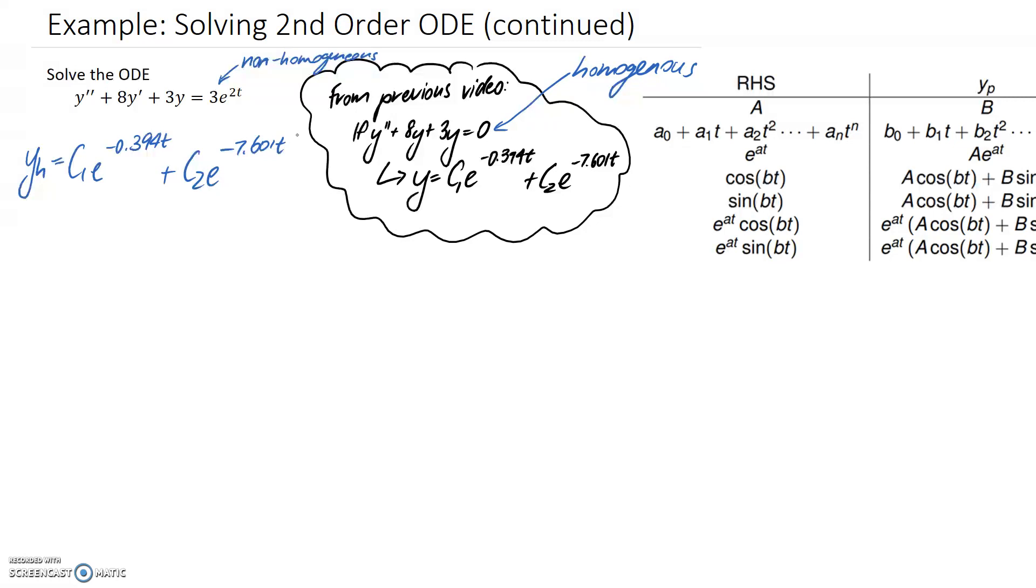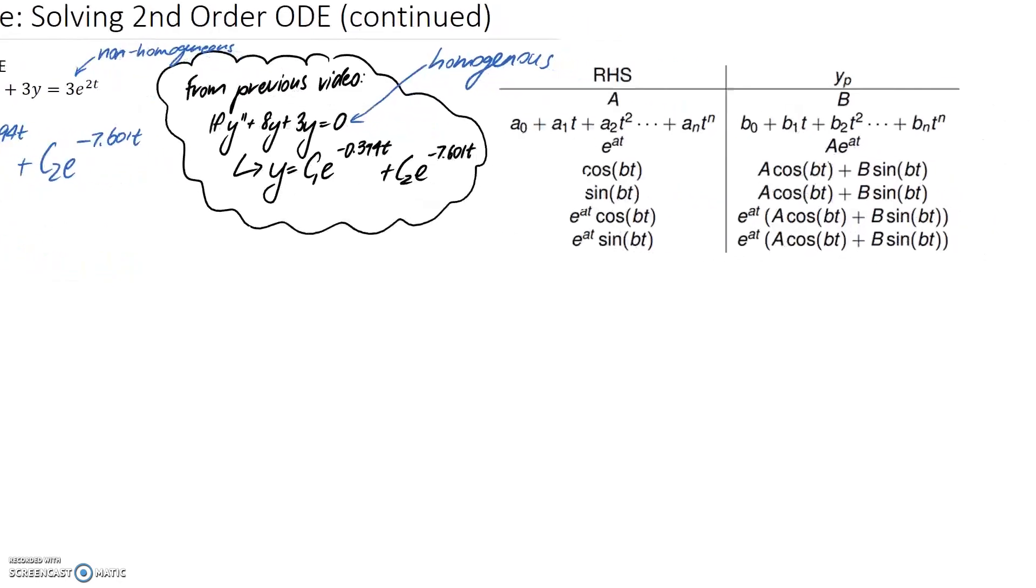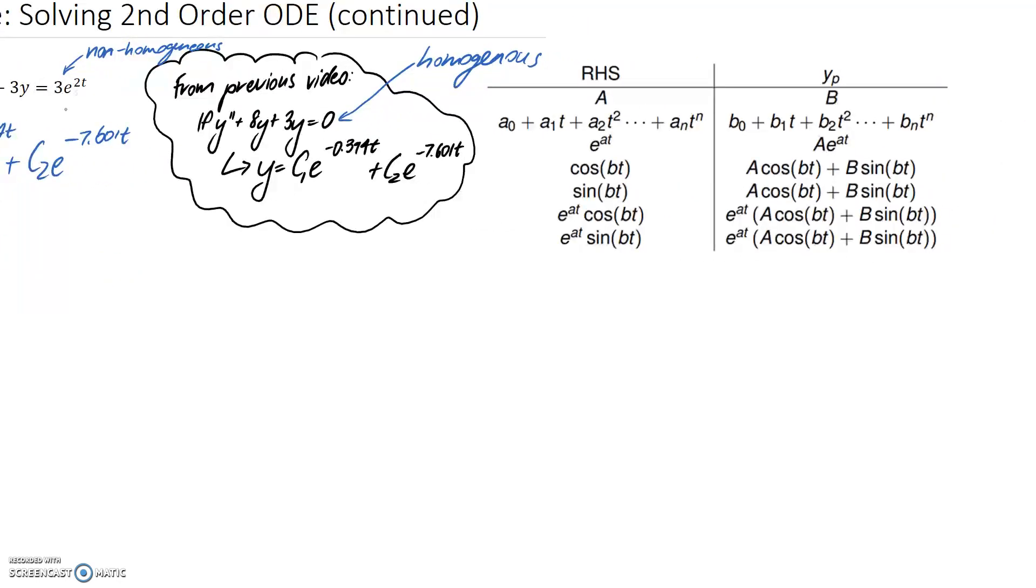So the next step that we need to take is to figure out the solution to the particular equation, and that's when we look at the non-homogeneous part. So we are going to consider the 3e to the 2t on the right hand side of the equation. So what we need to do is have a look at what we've got on the right hand side of the equation, and try and find something similar in the guessing table, which I've put over here. So ours is 3e to the 2t.